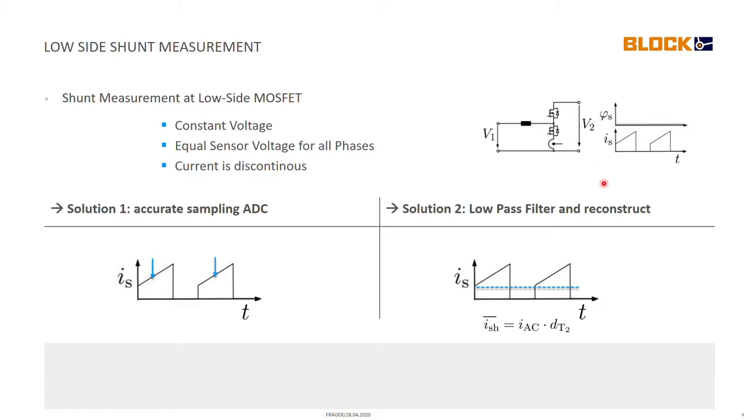The big problem of this position is that the current is discontinuous due to the switching nature of the bottom MOSFET. So we only see the current when the bottom MOSFET is turned on.